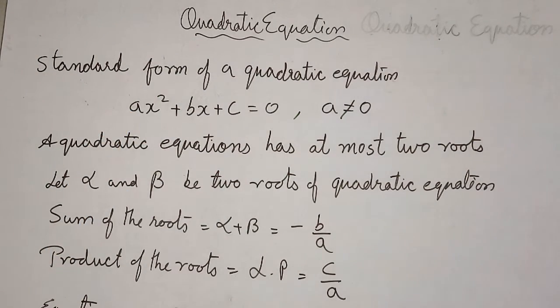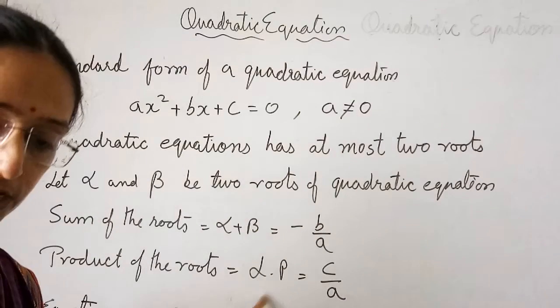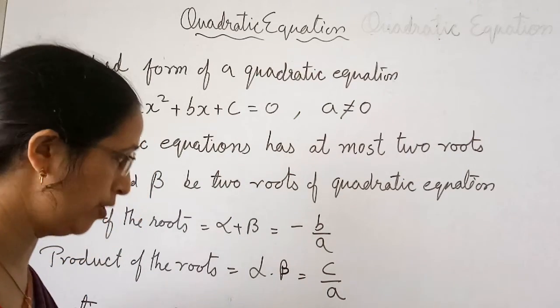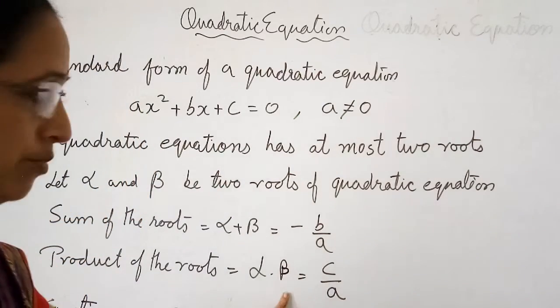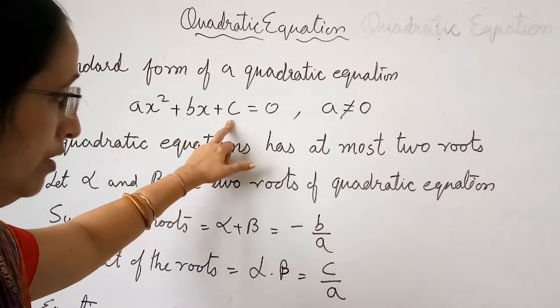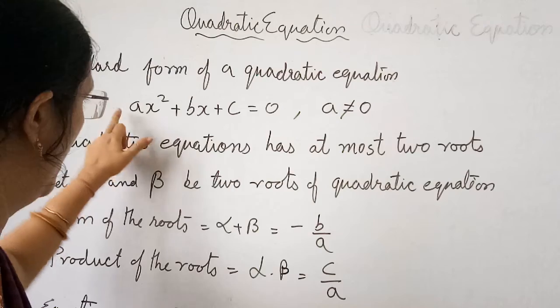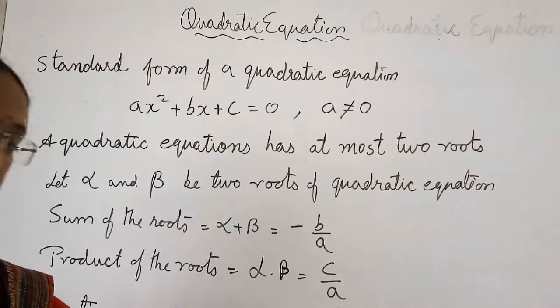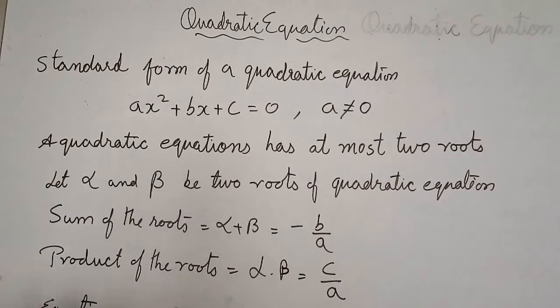Product of roots: α·β = c/a, where c is the constant upon a, the numerical coefficient of x². This is the standard form of equation.